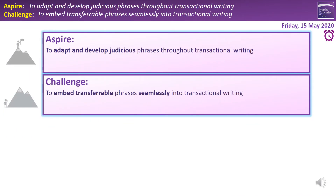Our learning intentions for today are to embed transferable phrases seamlessly into transactional writing. Transactional writing is, as we've talked about, speeches, articles, and letters. Transferable phrases, a bit like what we did with descriptive writing, are key stock phrases — sentences, or parts of sentences, that we can use again and again in different letters and articles, because writers will often have specific phrases they'll reuse. We're going to try and use those seamlessly, which just means it flows through our writing and it's not obvious that we've borrowed them from somewhere else.